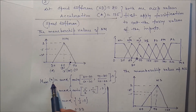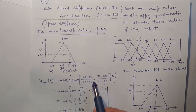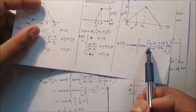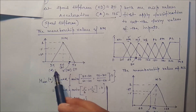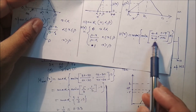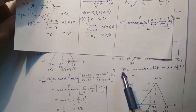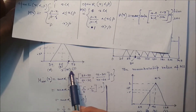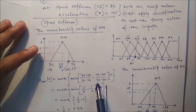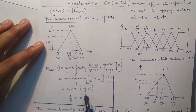For the NM fuzzy set, parameters are a = 30, b = 60, c = 90. Applying the triangular formula: μ_NM(80) = max(min((80−30)/(60−30), (90−80)/(90−60)), 0) = max(min(50/30, 10/30), 0) = max(min(5/3, 1/3), 0) = 1/3 ≈ 0.33.